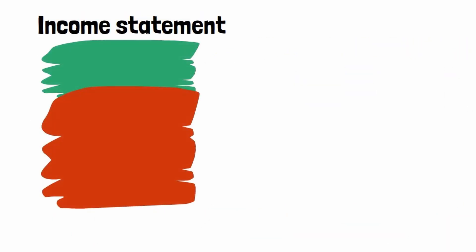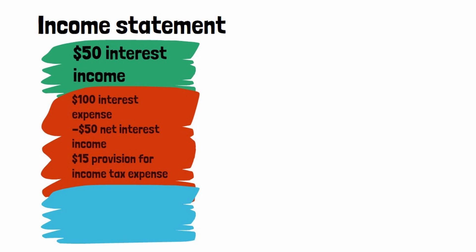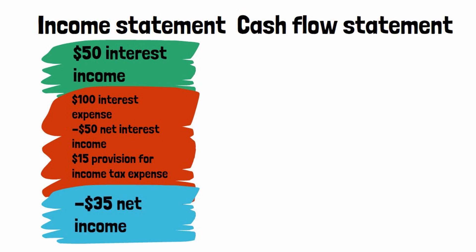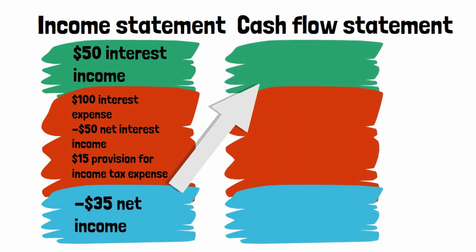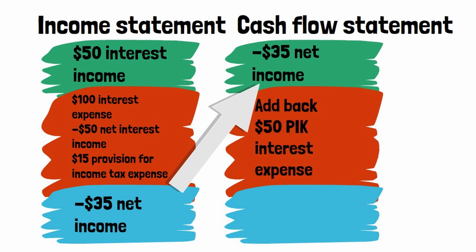On the income statement, there's $50 interest income, $100 interest expense, net interest income down $50, net income down $35. That flows to the top line of the cash flow statement. Add back the payment in kind interest, and there's a $15 increase in cash.